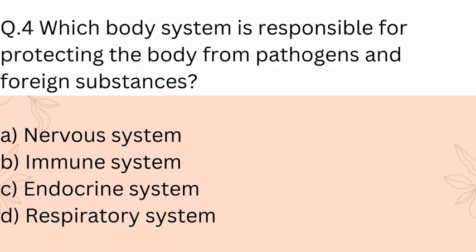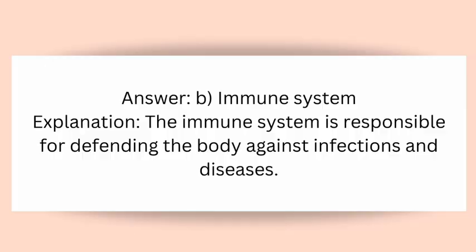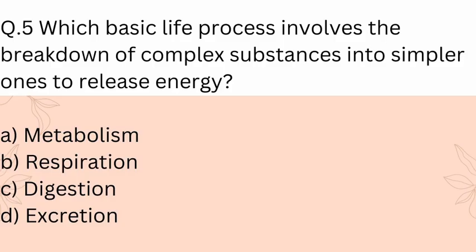Question 4: Which body system is responsible for protecting the body from pathogens and foreign substances? A) Nervous system, B) Immune system, C) Endocrine system, D) Respiratory system. Answer: B) Immune system. Explanation: The immune system is responsible for defending the body against infections and diseases.